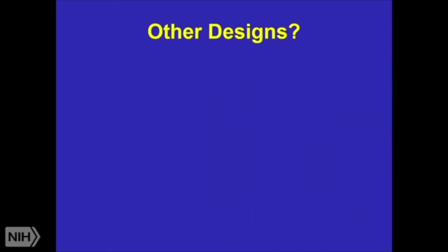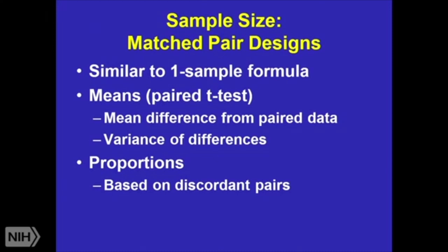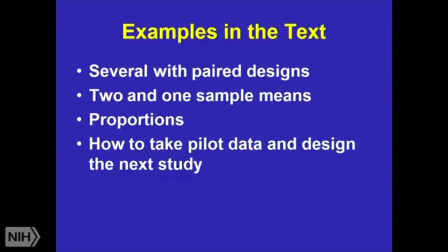So are there other designs? Sure, there are tons of designs. If you do a matched pair design, essentially this looks like the one-sample formula. If you're doing means, you're going to do the formula for a paired t-test. It's going to look at the mean difference from the paired data and the variance of the differences. And proportions. Proportions are actually based in discordant pairs for your sample size calculation. The textbook has various examples with paired designs, two-and-one sample means, various proportions. And we also talk a little bit about how you take pilot data and design your next study.